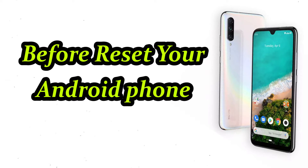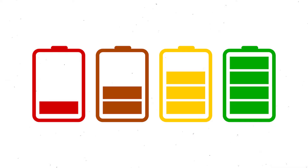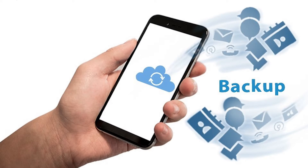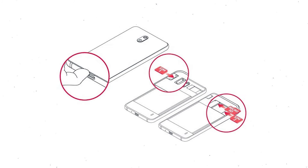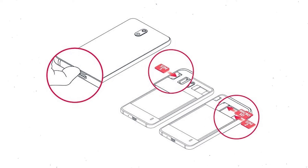Before resetting your Android phone, keep your mobile safe. Make sure the battery is properly charged before resetting — if less than 50%, charge your mobile first. You also need to make sure that the data on your device is backed up so you do not lose valuable photos or documents. Reset will delete all your mobile data, so remove your SIM and SD card first.